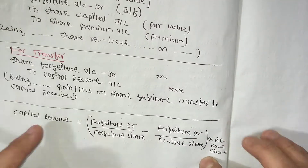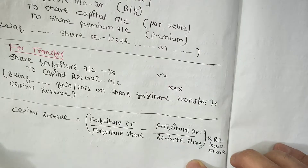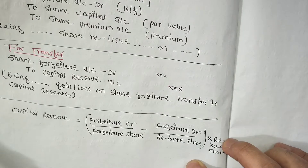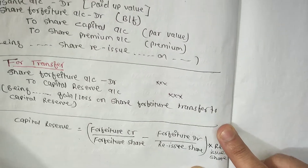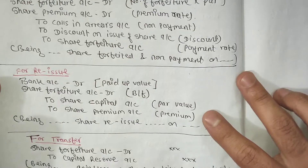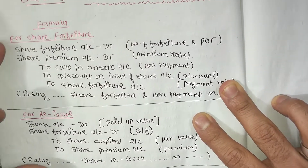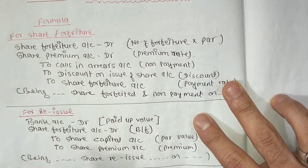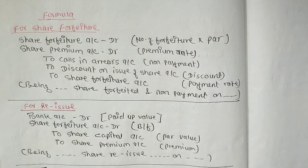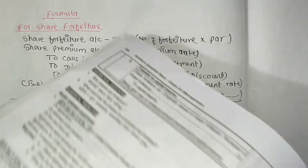This is the formula for the capital reserve. In Part 1, I will show you the playlist of the journal and reissue. In this video, we will need to solve the final exam question.